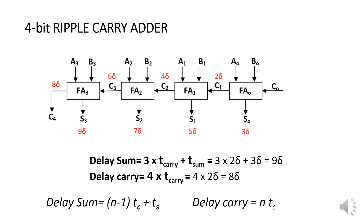Now let's see how to calculate the delay of a 4-bit Ripple Carry Adder. This is the logic circuit of the 4-bit Ripple Carry Adder. It is made of 4 Full Adder blocks connected in series. The carry bit issued from each Full Adder block inputs the next Full Adder block. Because it is connected in series, each Full Adder block has to wait for the previous carry to be available. Each Full Adder block generates the sum digit of its column. We know that the delay of each Full Adder in its faster alternative is: delay of the sum = 3δ, delay of the carry = 2δ.